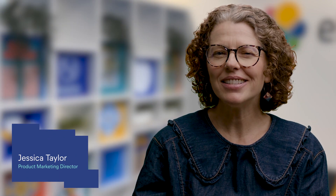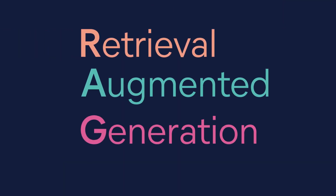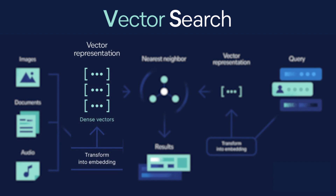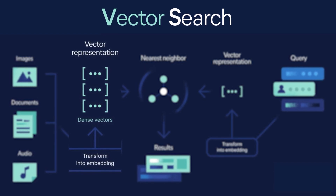Are you building a generative AI-powered application? Odds are you're considering retrieval augmented generation. And if so, you probably already know that you'll be using vector search to achieve optimal results. This begs the question: which machine learning model will you use to create the vector embeddings?